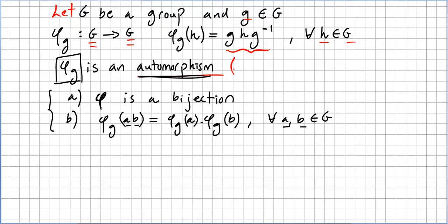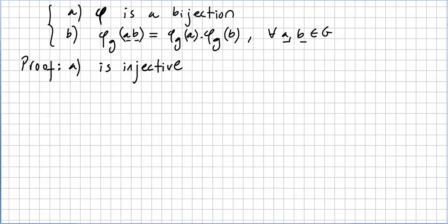This automorphism is sometimes called a symmetry — a term I like as well. Now let us begin the proof. We start with part A: we have to prove that φ is a bijection, so we prove it is injective and surjective. Let us first prove that φ is injective.